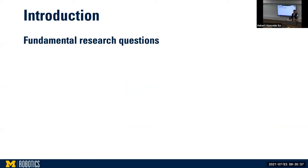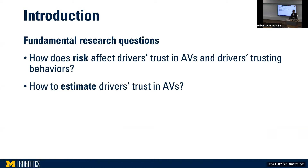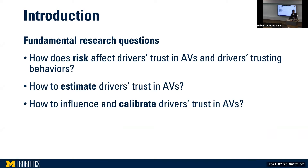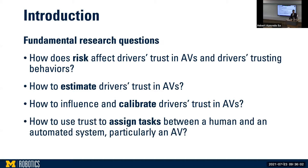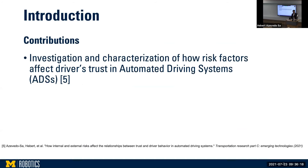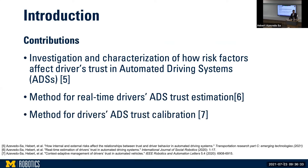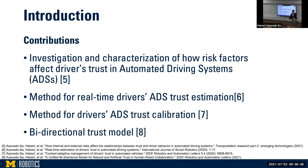To solve those HRI-related problems, we try to answer a few fundamental questions: How does risk affect AV trust and driver's trusting behaviors? How can we estimate driver's trust in AVs? How can we influence and calibrate driver's trust in AVs? And how can we use trust to assign tasks between a human and an automated system, in particular an AV? My contributions stem from answering these questions: the characterization of how risk factors affect driver's trust in automated driving systems (ADSs), the development of a method for real-time ADS trust estimation, a method for ADS trust calibration, and the development of a bidirectional trust model.